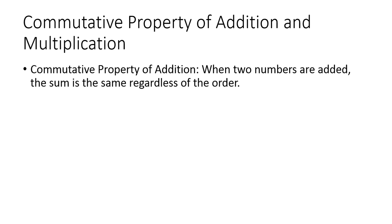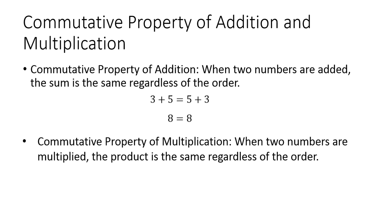Next we have the commutative property of addition and multiplication. The commutative property of addition is when you have two numbers that are added and the sum is the same regardless of the order. So three plus five is the same as five plus three, which equals eight. The commutative property of multiplication is the same thing except you're multiplying — when two numbers are multiplied, the product is the same regardless of the order. So four times five is the same as five times four: 20 equals 20.